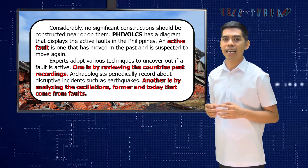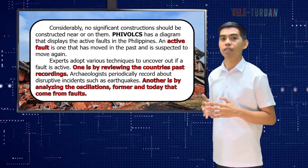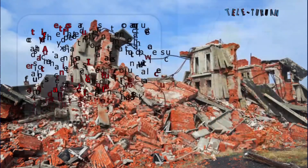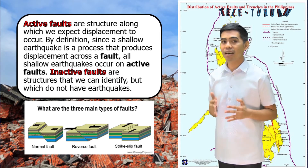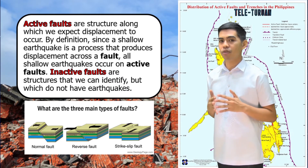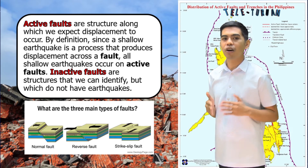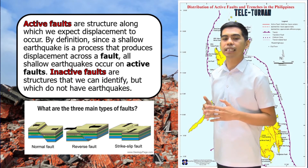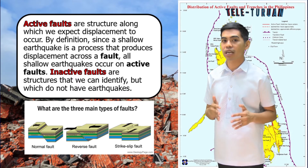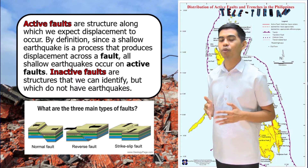Experts adopt various techniques to find out if a fault is active. One is by reviewing the country's past recordings — archaeologists periodically record disruptive events such as earthquakes. Another is by analyzing the oscillations, past and present, that come from faults. Active faults are structures along which we expect displacement to occur. By definition, since a shallow earthquake is a process that produces displacement across a fault, all shallow earthquakes occur on active faults. Inactive faults are structures that we can identify but which do not have earthquakes.